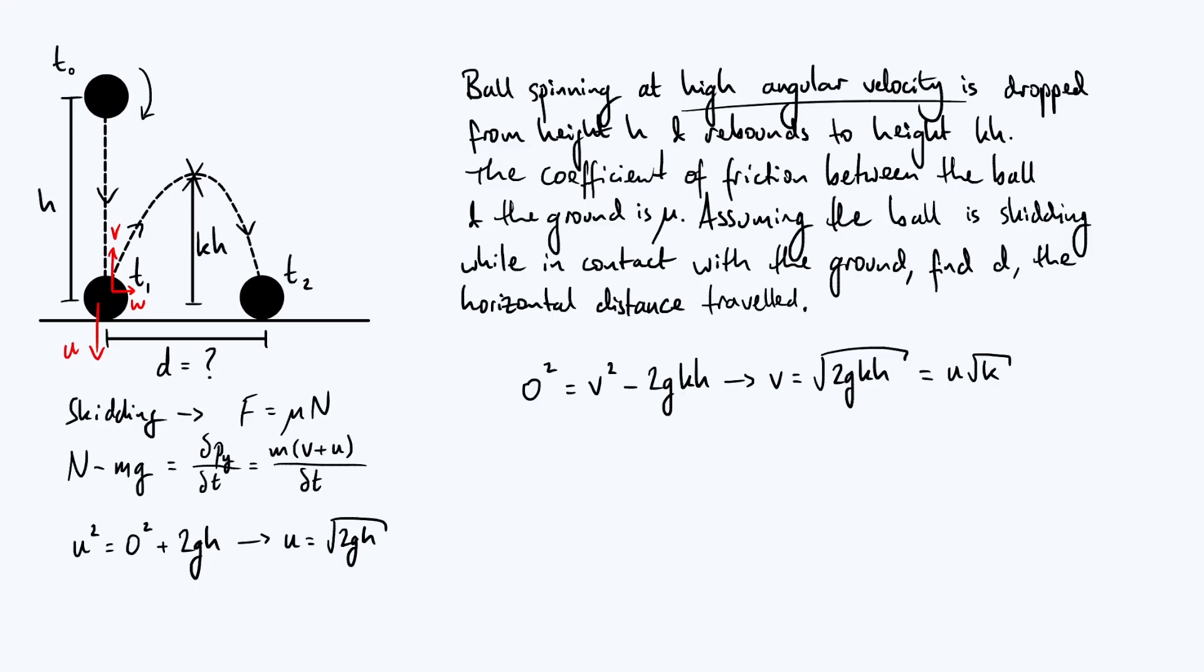So let's put all these results together and try and come up with an expression for the frictional force F. So F is mu times the normal contact force. So we're going to start with a mu. The normal contact force is, remember, this plus mg. We've got to move that mg to the other side. So we are going to have m into v plus u. We can take out a common factor of root 2gh. Then we just get a 1 in our brackets from the u term, and then we get a plus root k from the v term, because remember we said v was just u times root k. And then we need to divide that whole thing by the time of contact, delta t. Then don't forget, we've got to move that mg term over as well. So we have to add on mu mg.